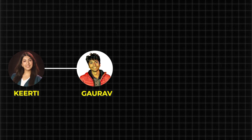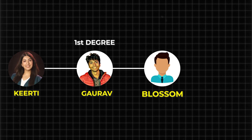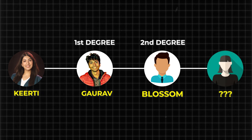For example, I'm connected to Gaurav and then Gaurav is connected to Blossom, then Blossom is my second degree connection. And suppose Blossom is connected to someone else, then that person is my third degree connection.